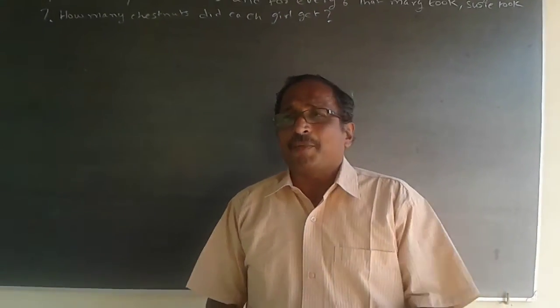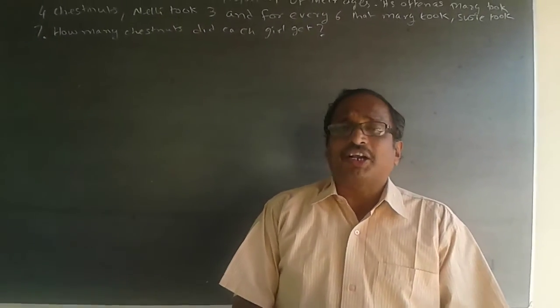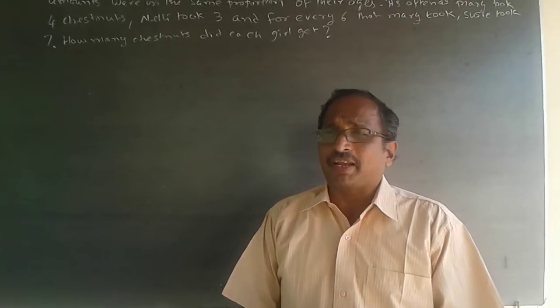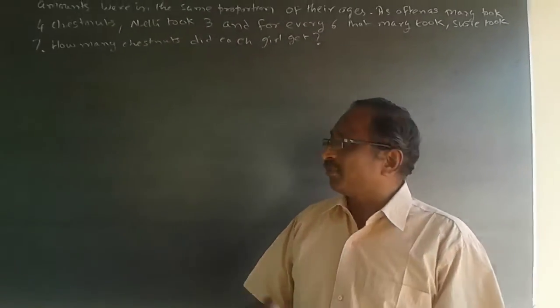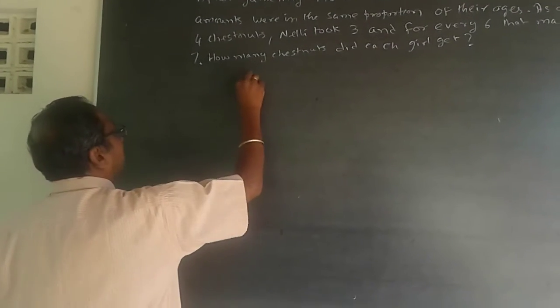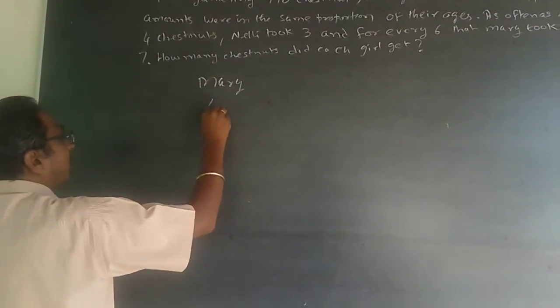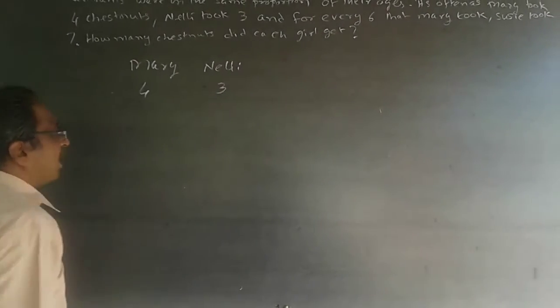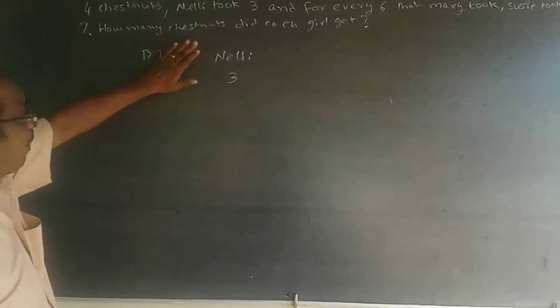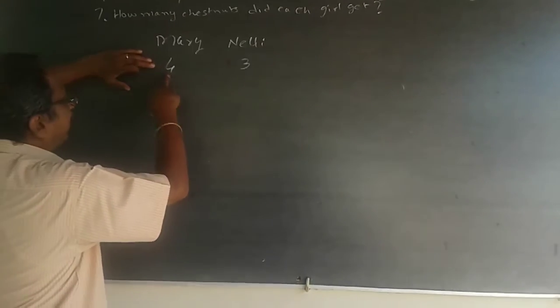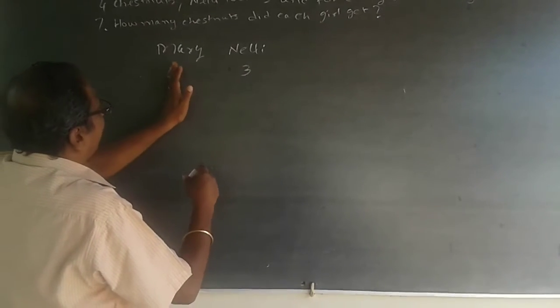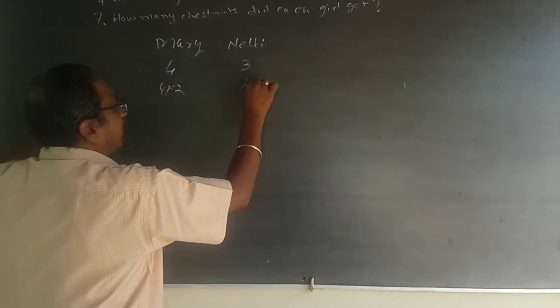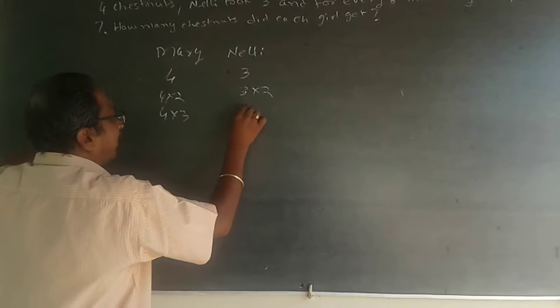This is a question on ratios and proportions. Ratios will always be maintained. Whenever Mary is taking 4, Nelly is taking 3. I'm just giving an example. If she is taking 4, she is taking 3. If she is taking 1 into 4, she is taking 1 into 3. If Mary is taking 4 into 2, then Nelly will also take 3 into 2. If she is taking 4 into 3, Nelly will take 3 into 3.